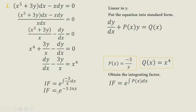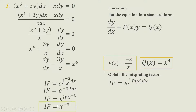Integrating the exponent gives negative 3 ln(X). Raising that to the exponent gives X raised to negative 3. Since e raised to ln equals 1, the remaining value is X raised to negative 3. So our integrating factor is X⁻³.